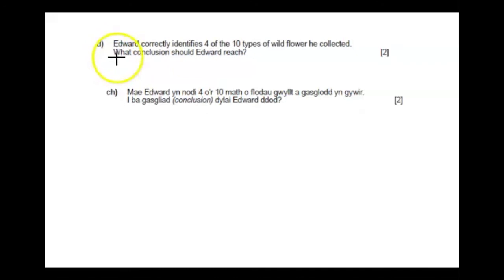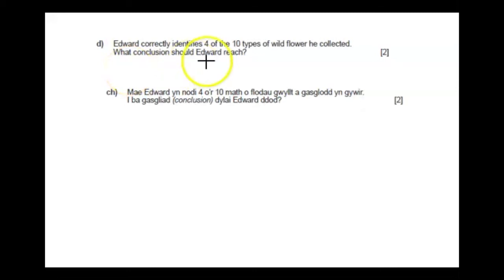Part D: Edward correctly identifies 4 of the 10 types of wildflowers he collected. What conclusion should Edward reach? The critical region was X greater than or equal to 5, but x equals 4 here, which is not in the critical region. So there is no reason to reject the null hypothesis. There is insufficient evidence to conclude that Edward has improved his ability to correctly identify wildflowers.